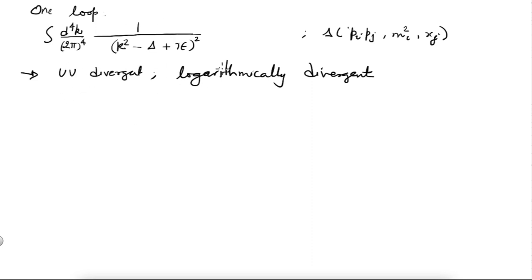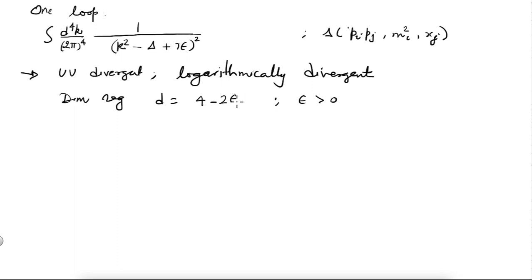What we will do is to evaluate this integral. Because this is divergent — it's infinite — no matter what I do to this integral it remains infinite. So I do a regularization and go to d = 4 − 2ε where ε is positive. When ε goes to 0 you recover this integral in that limit. ε is some positive number so that the number of dimensions is lower than 4. It is not necessary that you put this 2 — you can work with 4 − ε also, it is just a choice.